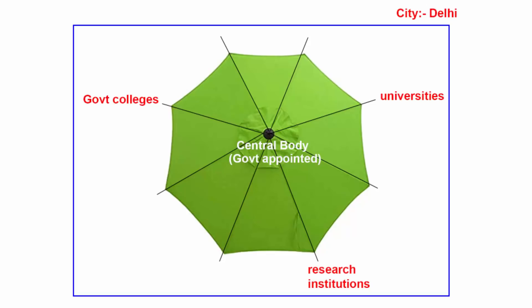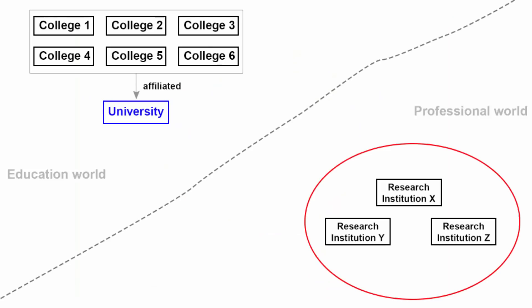In simple words, this is a step towards creating singular leadership so that there is some sort of integration. Colleges, universities, and other research institutions all have different objectives and goals. But at the root level, education and knowledge binds them together.